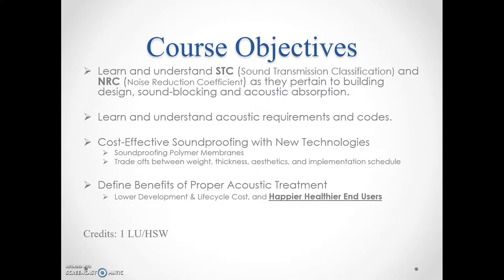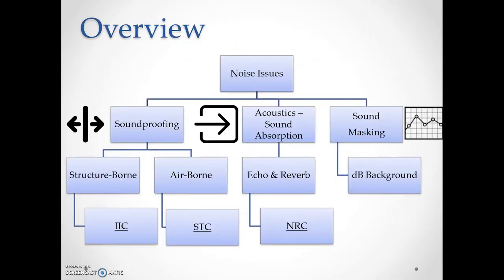Here's an overview of how we break down noise issues in general. They fall into one of three categories for mitigation: a soundproofing issue, an acoustics or sound absorption issue, or a speech privacy and sound masking issue. When we say soundproofing, we're talking about blocking noise between rooms or adjacencies — a mechanical room next to a classroom, or two residential units next to each other. This is where you'll find your STC and IIC ratings.